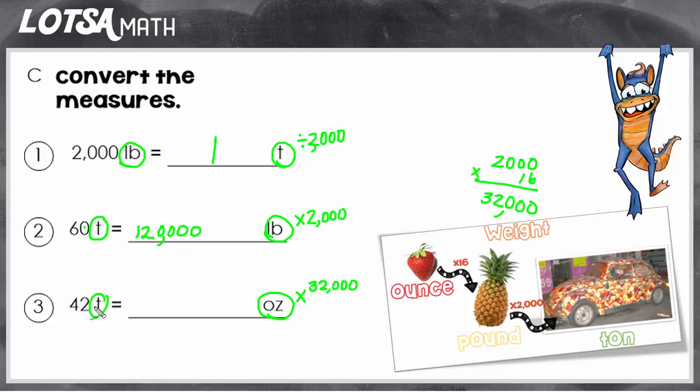So now to find out how many ounces are in 42 tons, I have to take 42 and multiply by 32,000. So I'm going to do 42 times 32, and then at the end I'm going to put my zeros back on. So I have 1,344, but I need to add those zeros back on. So the answer would be 1,344,000. So 42 tons has 1,344,000 ounces.